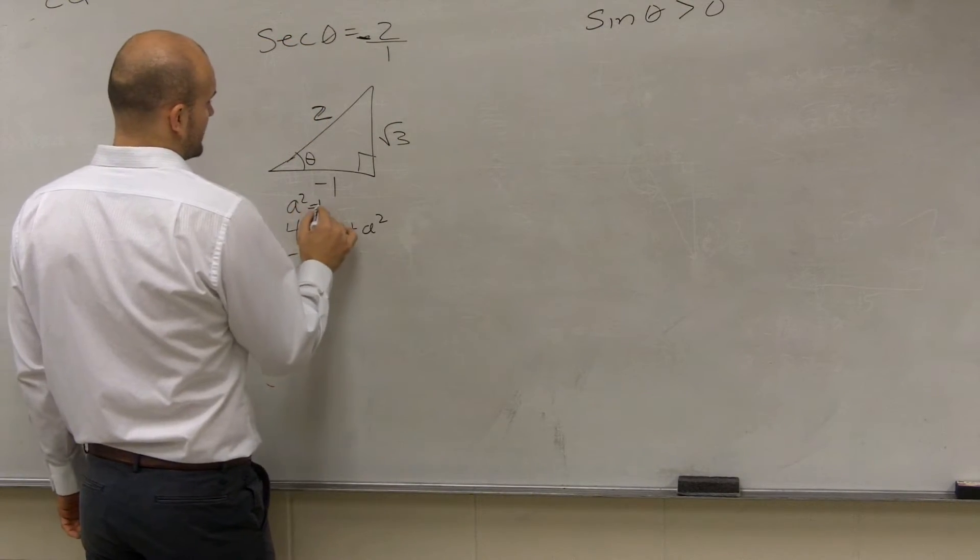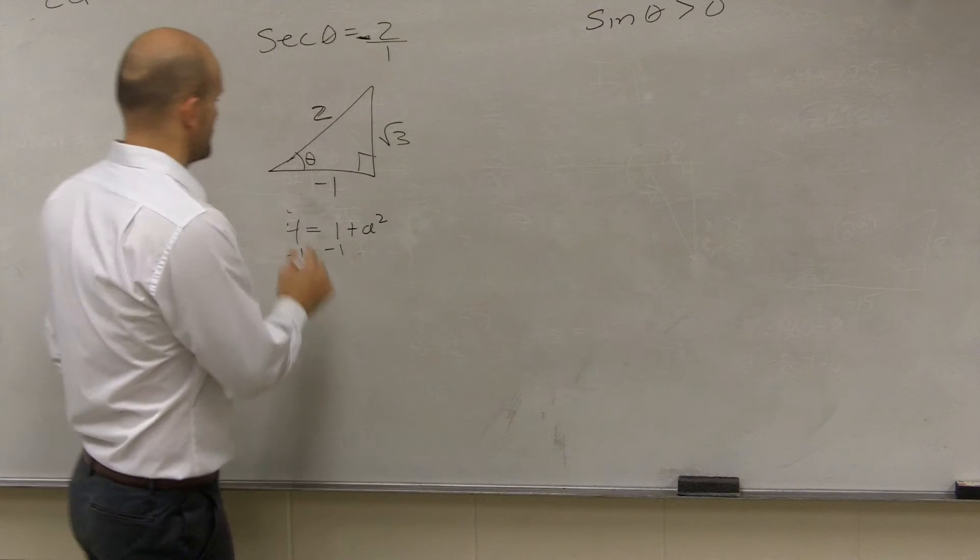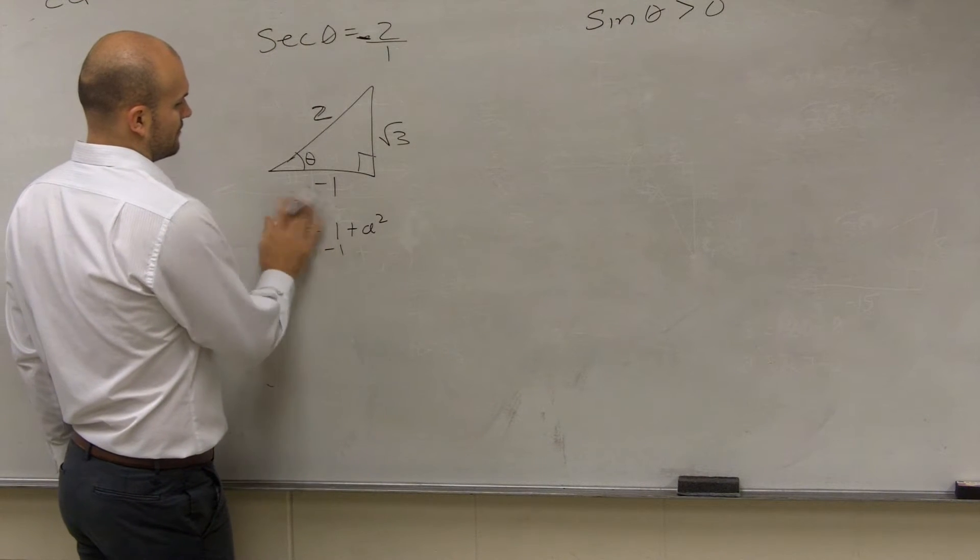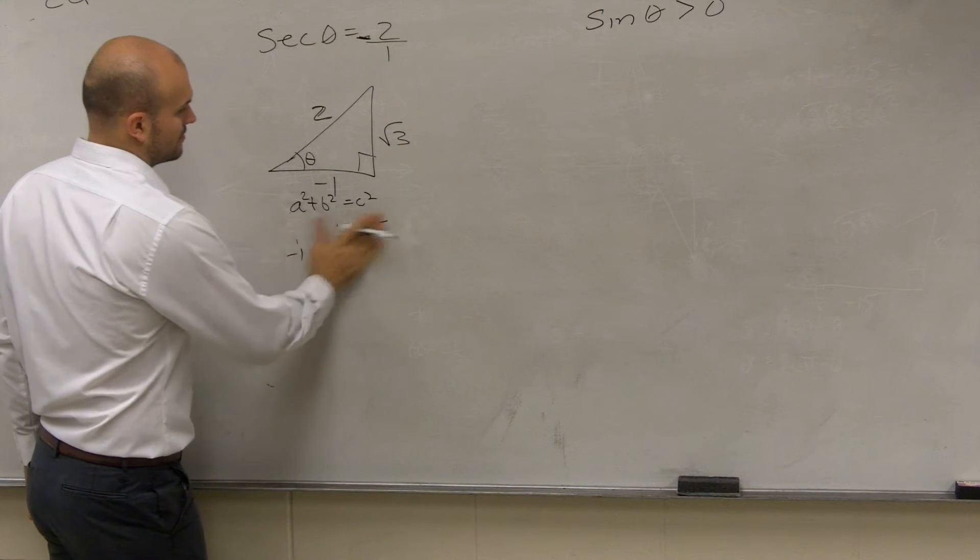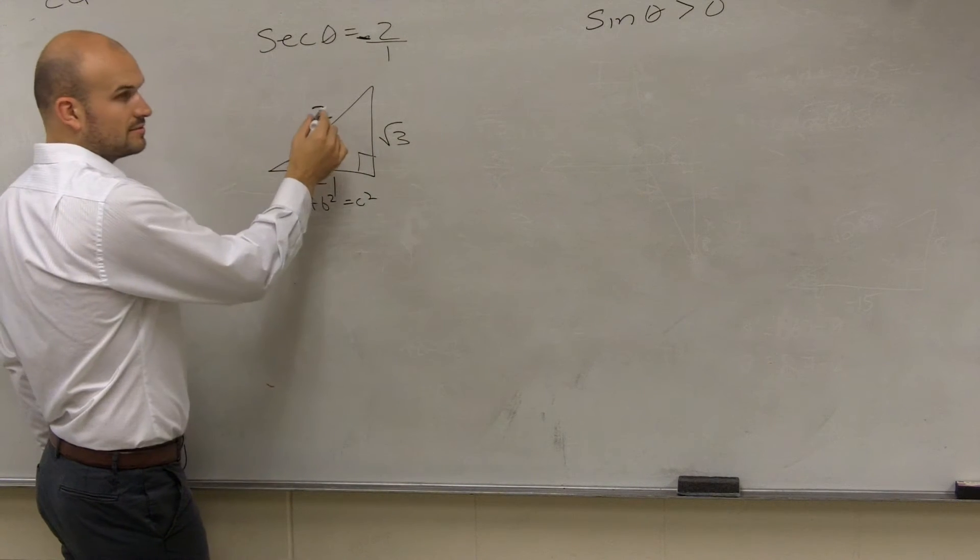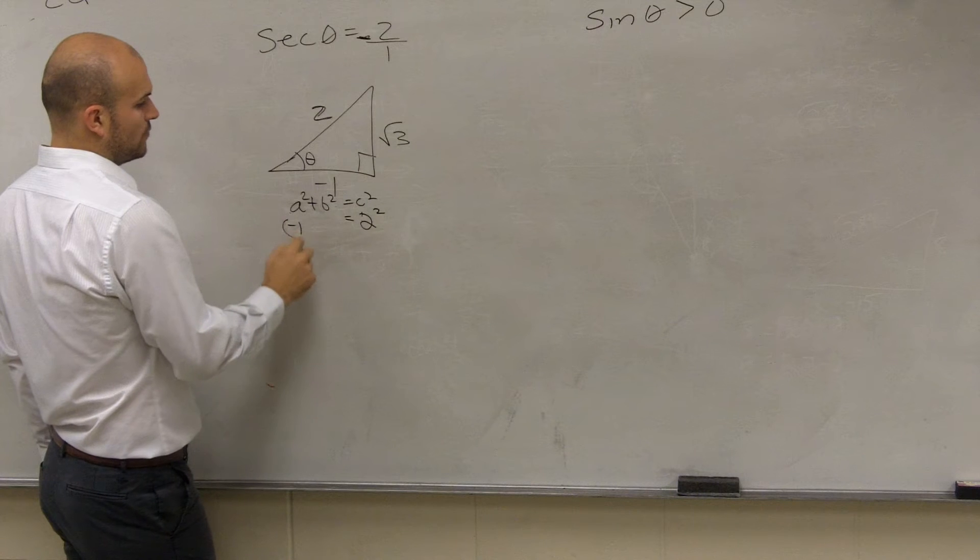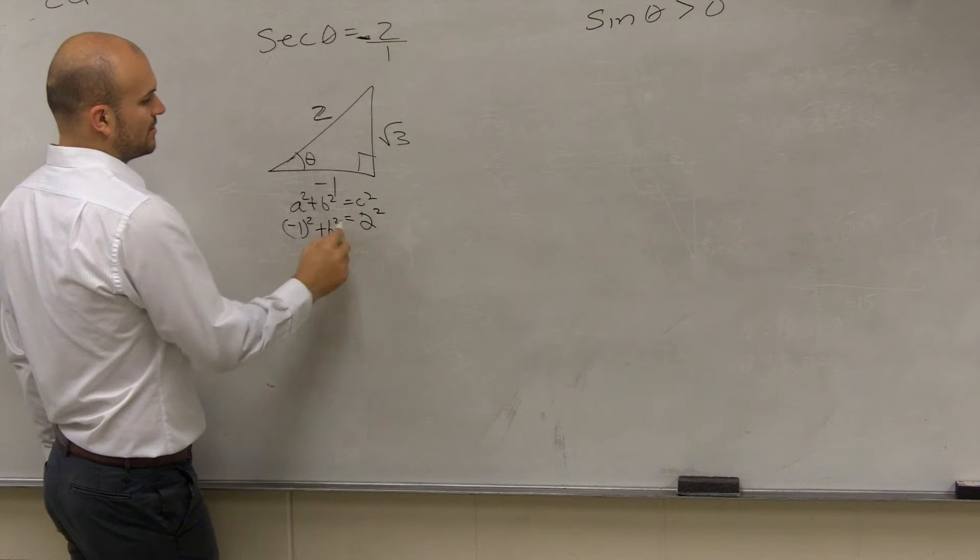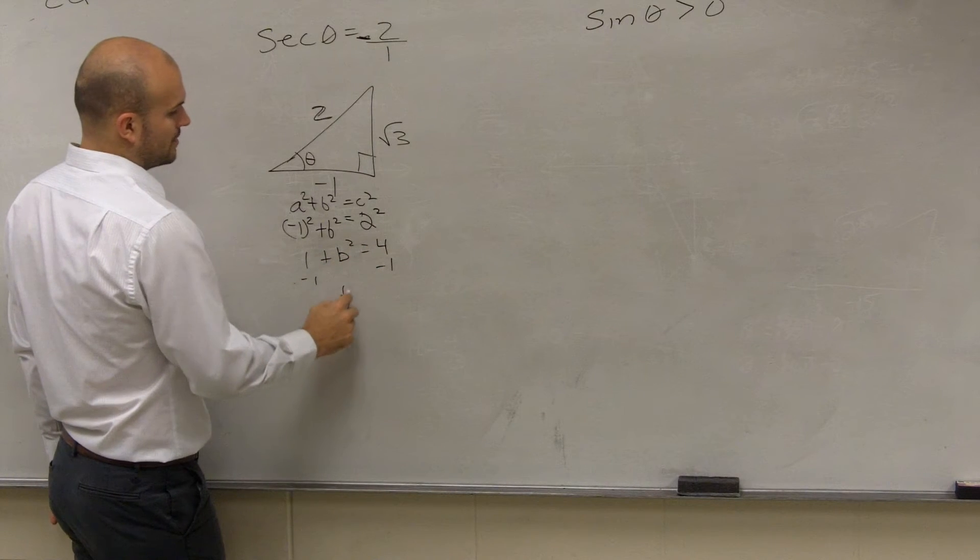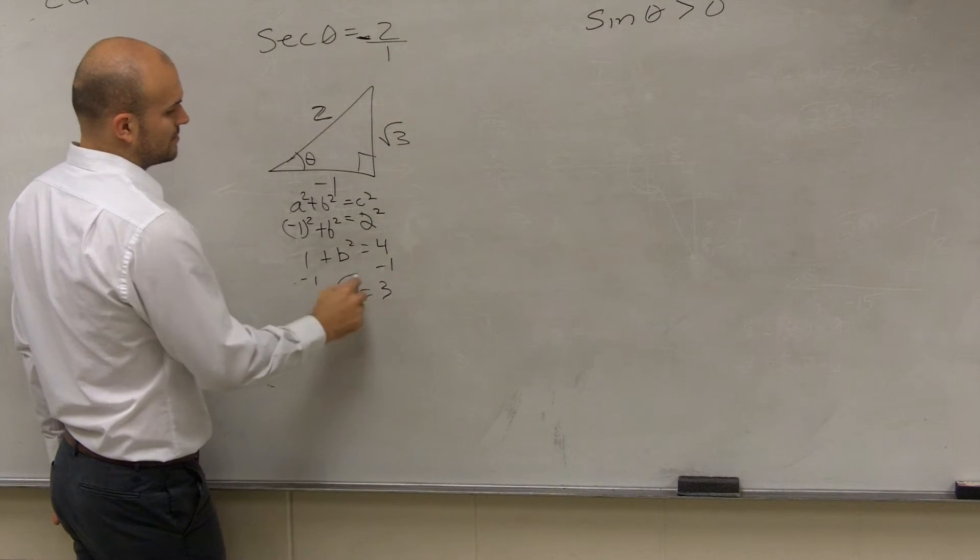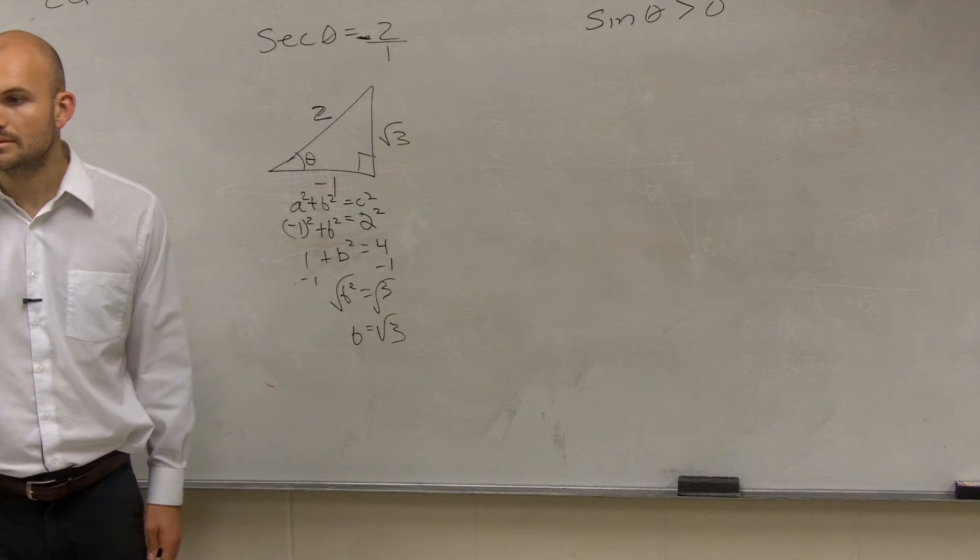Remember, a squared plus b squared equals c squared, right? Well, remember, c squared is my 4, or 2 squared, equals negative 1 squared plus b squared. Negative 1 squared is 1 plus b squared equals 4, minus 1, minus 1. B squared equals 3, square root, b equals the square root of 3.